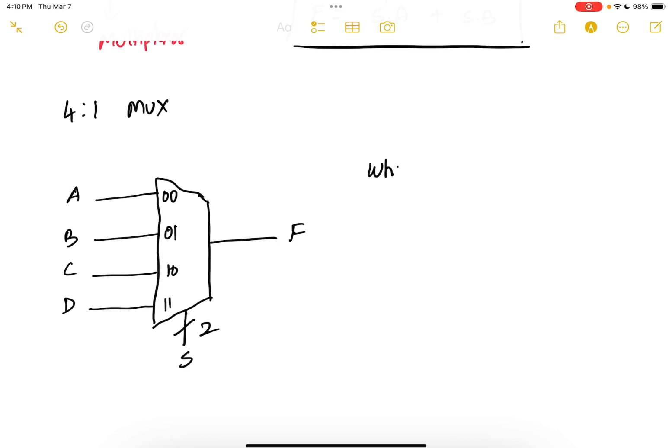So when S is equals to 0, 0, F gets A. When S is 0, 1, F gets B. When S is 1, 0, F gets C. And when S is 1, 1, F gets D. So this is a 4 to 1 MUX.